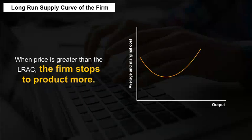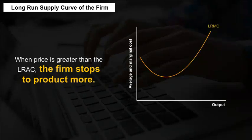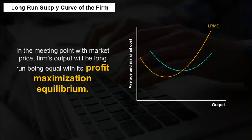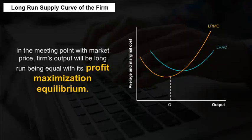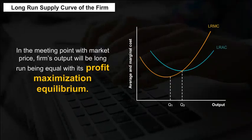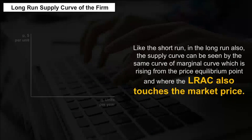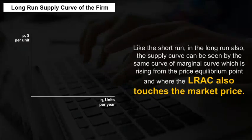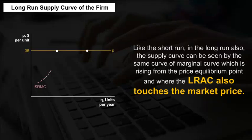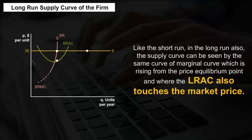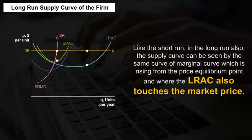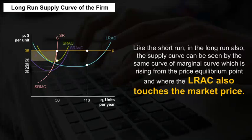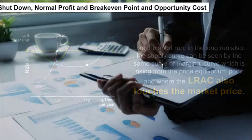Long-Run Supply Curve of the Firm. When price is greater than the LRAC, the firm stops producing more. At the meeting point with market price, the firm's output will be at long-run profit maximization equilibrium. Like the short run, in the long run also, the supply curve is given by the same marginal cost curve, rising from the price equilibrium point where the LRAC also touches the market price.